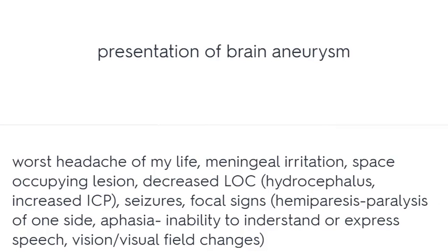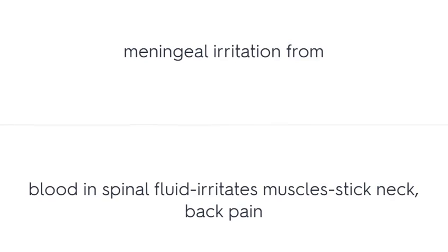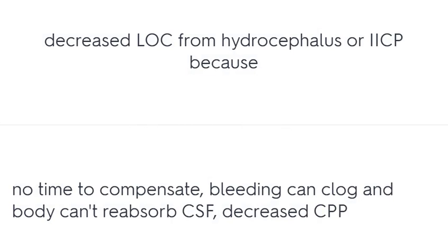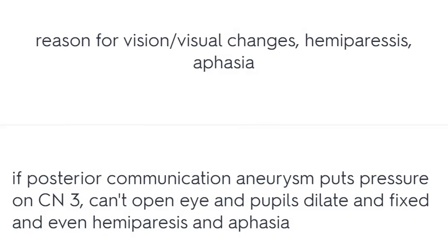Presentation of brain aneurysm includes: worst headache of the patient's life, meningeal irritation, space-occupying lesion effects, decreased LOC, seizures, and focal signs. Meningeal irritation from blood in spinal fluid irritates the muscles, causing stiff neck and back pain. If a posterior communicating aneurysm puts pressure on CN3, the patient cannot open the eye and pupils dilate and are fixed, with possible hemiparesis and aphasia.